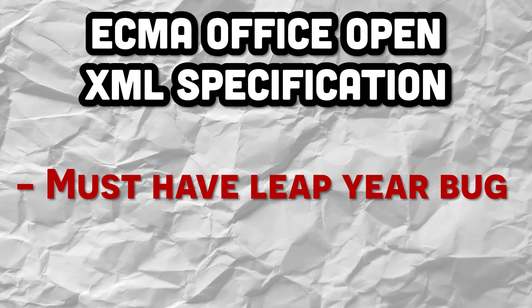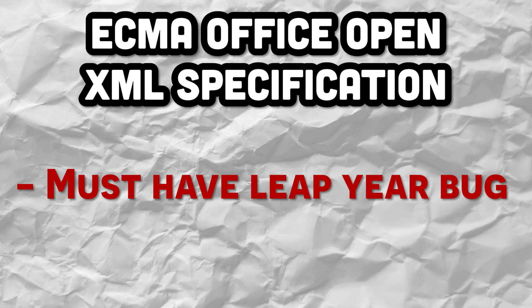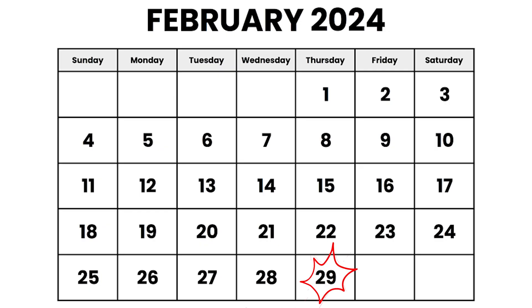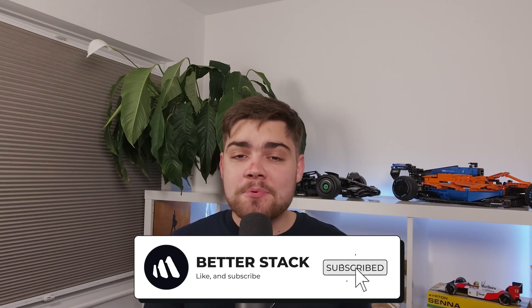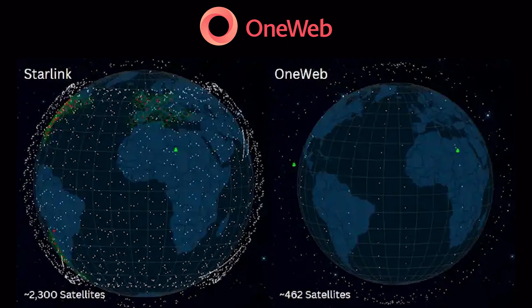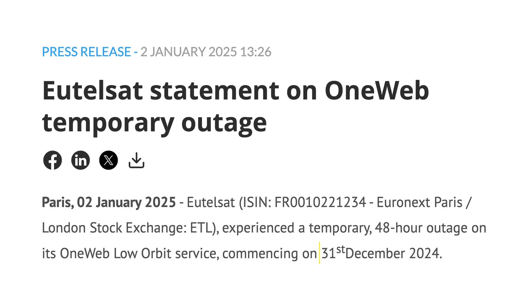In fact, Excel's has been around for so long it's now part of the spreadsheet standard, but more on that later. In case you forgot, February 29th, 2024 was a leap year. Now, most of the time the issues occur on the leap day itself, but sometimes those bugs take until the end of the year to show up, which is exactly what happened with OneWeb, a Starlink competitor. The Satellite Broadband Service went down just after midnight on December 31st, 2024, for 48 hours.